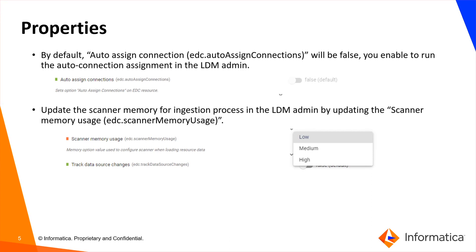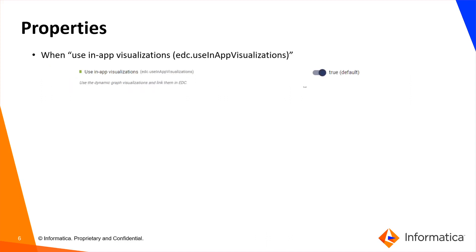The next property is scanner memory usage. While scanning a large scope of metadata from source systems, the user can increase the memory of the scanner ingestion phase in EDC admin by choosing values available under the scanner memory usage property. The next property is in-app visualization, which helps the user to view the data flow from MetaDex UI. EDC users can find the link for MetaDex UI under system attributes, and by navigating to the respective MetaDex UI, can view the data flow occurring between assets from the source system.